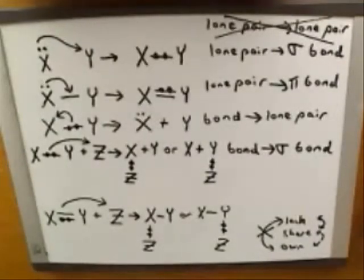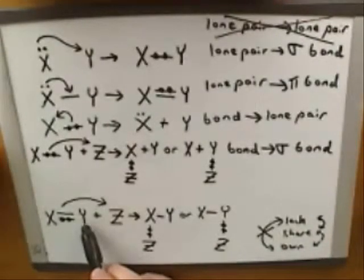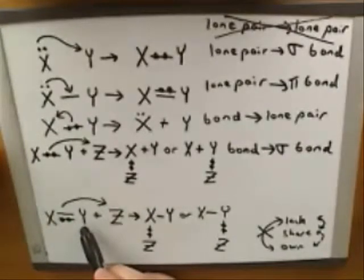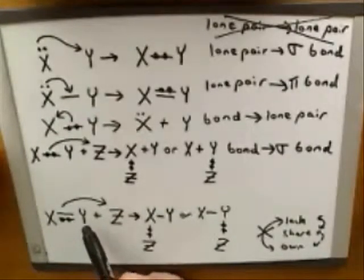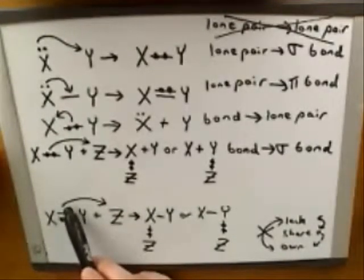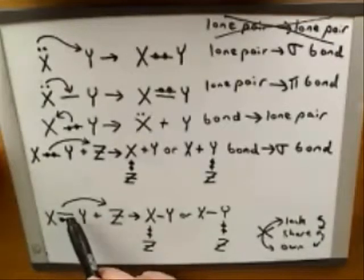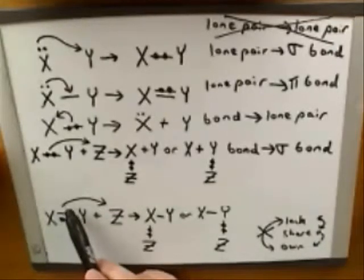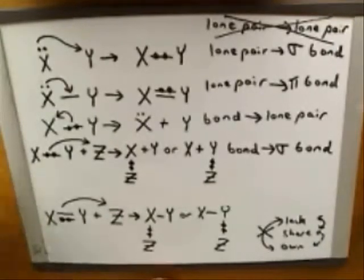Let me remind you again that we don't want to make the mistake of erasing both of the bonds between X and Y. That would be an easy mistake to make here. This tail indicates that we're moving one bond — we're erasing one bond, not both of them.